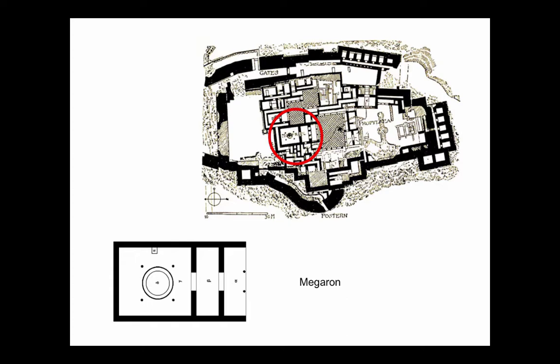We know a lot about the Megaron because it's described in Homer's Odyssey. The Odyssey begins with Penelope, Odysseus's wife, saying to her son Telemachus, it's been 20 years since dad's been away — why don't you go find out where he might be? Telemachus goes to the palace of King Nestor and meets him in his Megaron, which Homer describes in some detail.